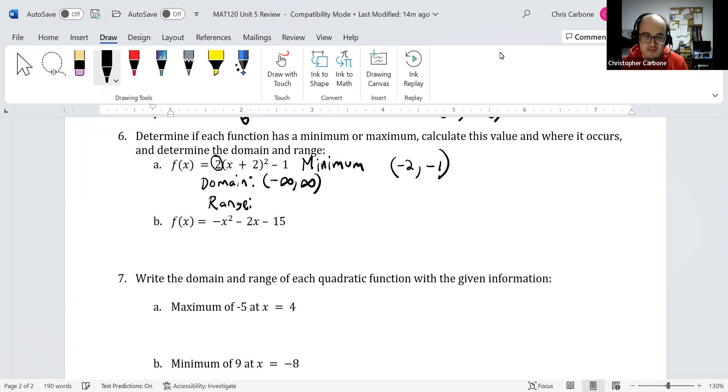Since this is a minimum, it opens upwards. The lowest point on it is the value of -1. And since it actually does exist there, it'll be a bracket: [-1, ∞) since it opens upwards.